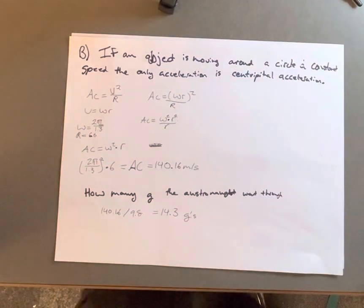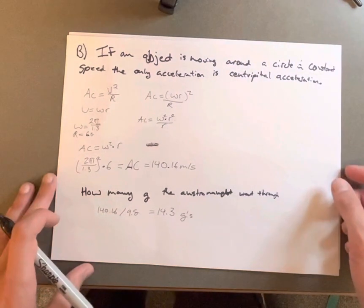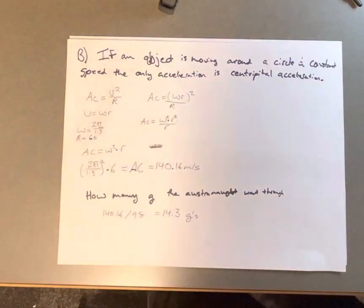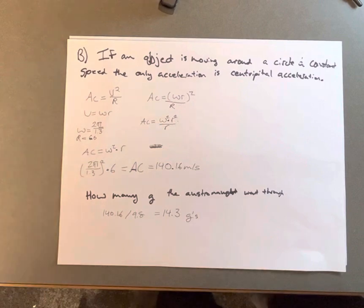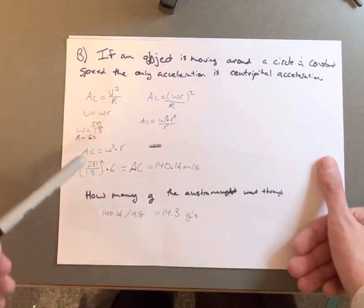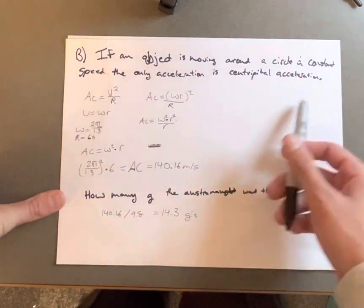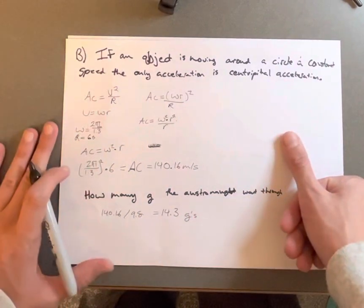For part b, when an object is moving around a circle at a constant speed, the only acceleration is centripetal acceleration. We know it's going around at a constant speed because the object is rotating at top speed. We're going to find how many g's the astronaut experiences, so we need to find the centripetal acceleration, which is linear velocity squared over r.